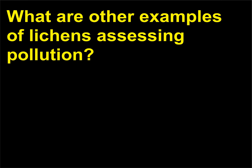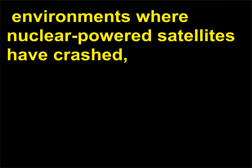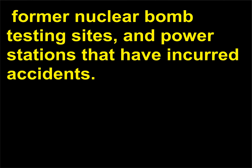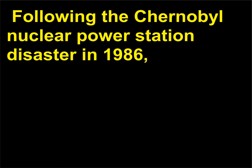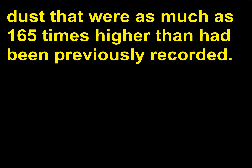What are other examples of lichens assessing pollution? Lichens are used to assess radioactive pollution levels in the vicinity of uranium mines, environments where nuclear-powered satellites have crashed, former nuclear bomb testing sites, and power stations that have incurred accidents. Following the Chernobyl nuclear power station disaster in 1986, Arctic lichens as far away as Lapland were tested and showed levels of radioactive dust that were as much as 165 times higher than had been previously recorded.